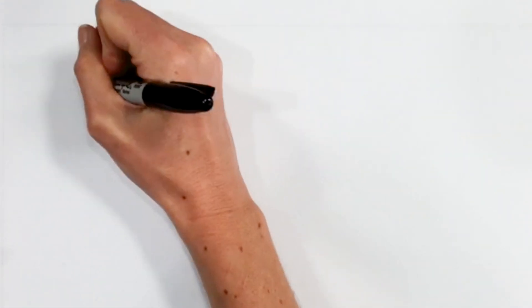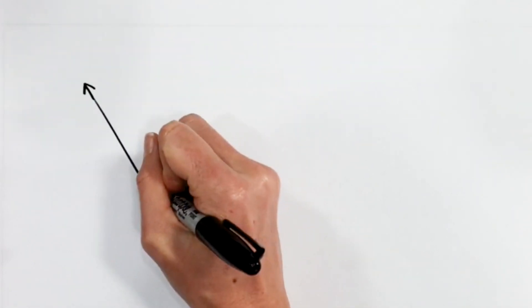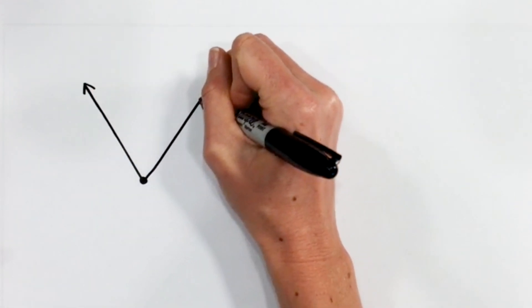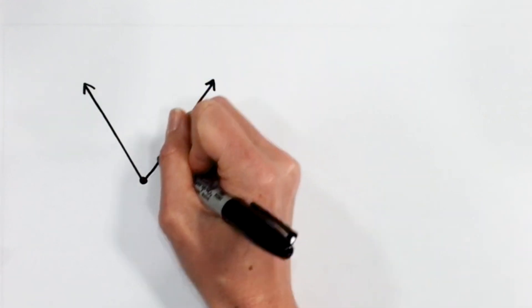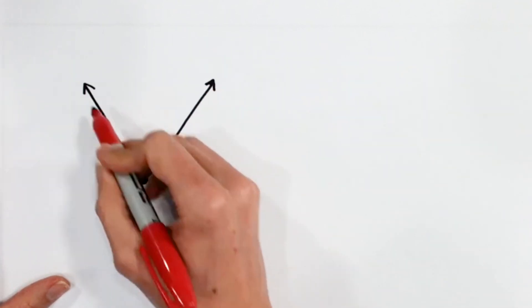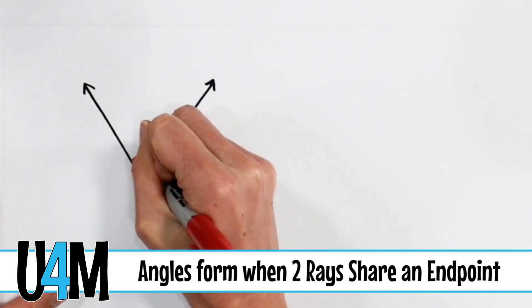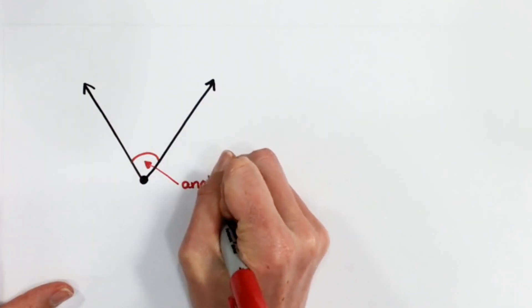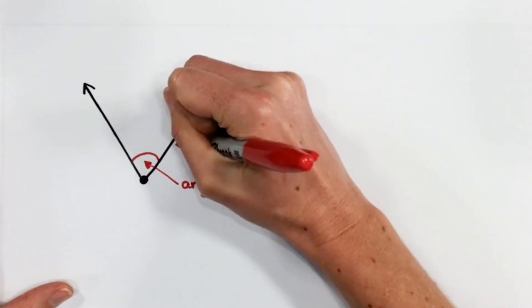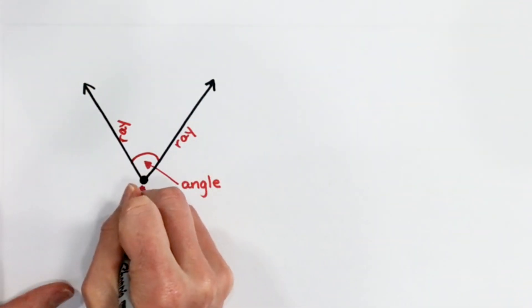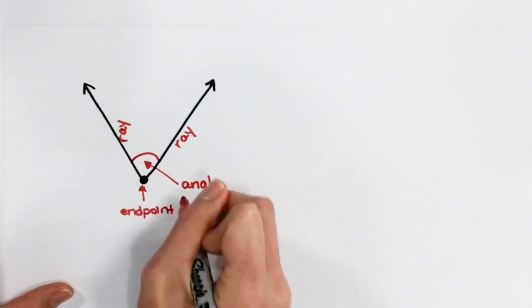An angle is formed when two rays — a ray has an endpoint and then goes on forever in one direction — and another ray that goes on forever with an endpoint. So right here, we can see that these two rays share this endpoint. I'm going to go ahead and label this as an angle. So again, we have a ray, another ray, and my endpoint, which forms an angle.